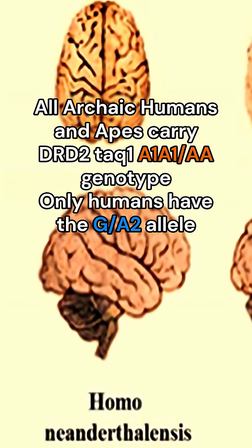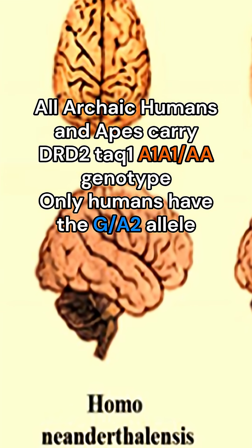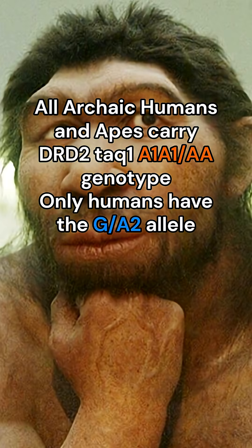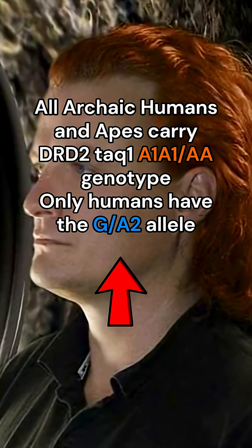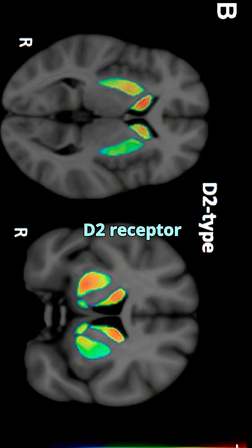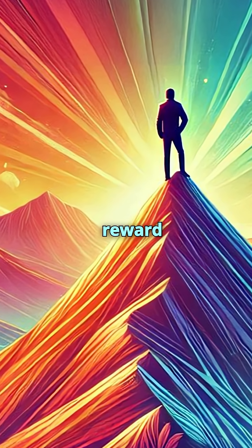This is interesting because RS-1800497's ancestral allele is A. We see it in Neanderthals and in many primate species. At some point, the G mutation occurred in humans, greatly increasing D2 receptor density, potentially boosting motivation and reward sensitivity.